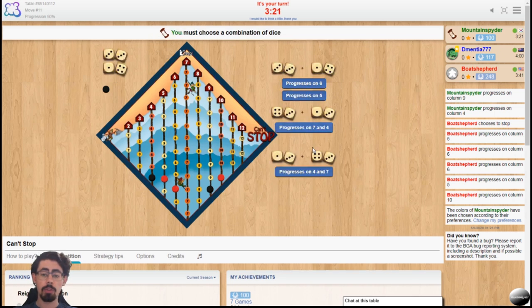Now the trick is, you've only got 3 markers to place each turn. So I need these 3 sets of dice. Out of them, I need to be able to place my last marker on one of these. Now I've rolled 6, 5, 7 and 4. I've already got a marker on 4 and 9.